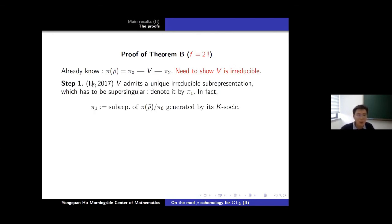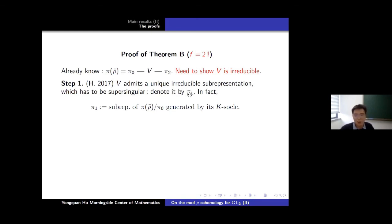Once we have π_1, we are left to show V = π_1. Let me recall the proof. We define π_1 to be the subrepresentation of π(ρ̄)/π_0 generated by the K-socle, and then check π_1 is irreducible. For this we need information about the K-socle; we need to compute it. We recall a general result: if you have π_0 (a principal series) and another irreducible π' which is a subquotient of a principal series (non-supersingular), and Ext^1(π', π_0) is nonzero, then π' must be isomorphic to π_0.